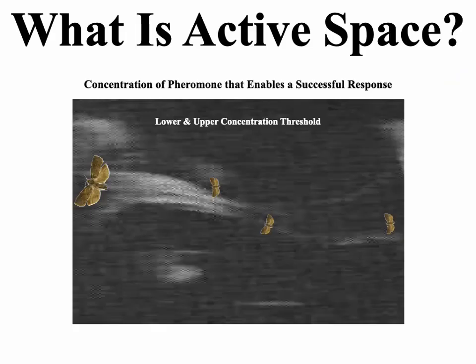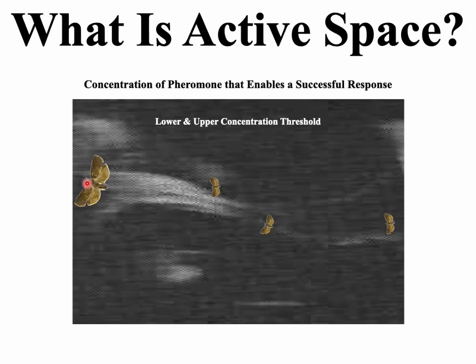The active space is the concentration of pheromone that enables a successful response — meaning males downwind detect the pheromone from the female, follow a concentration gradient up to the female, land, and mate with her. There is both a lower concentration and an upper concentration that enables that successful response.